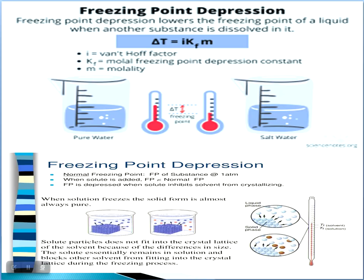Coming to the next part: freezing point depression. Depression means something gets lowered. After adding a non-volatile solute, the freezing point will be lower — it gets depressed — because the non-volatile solute particles inhibit the solvent from crystallizing. The formula is: ΔTf = i × Kf × m, where Kf is the molar freezing point constant and m is the molality.